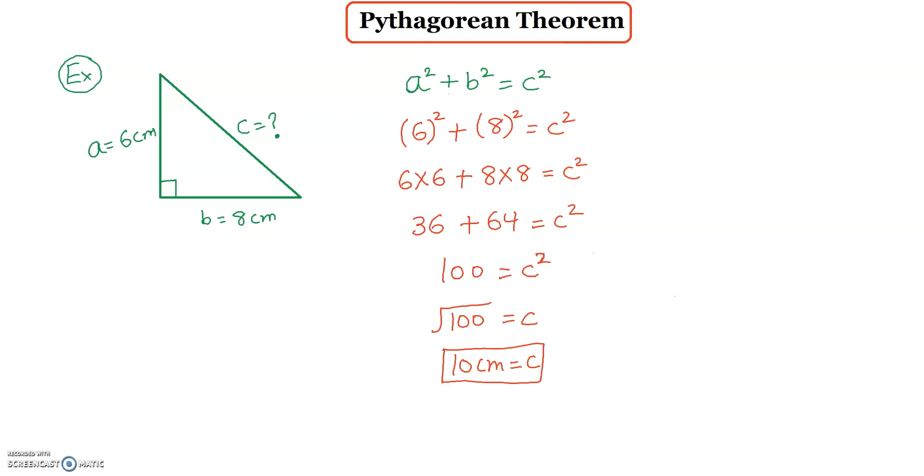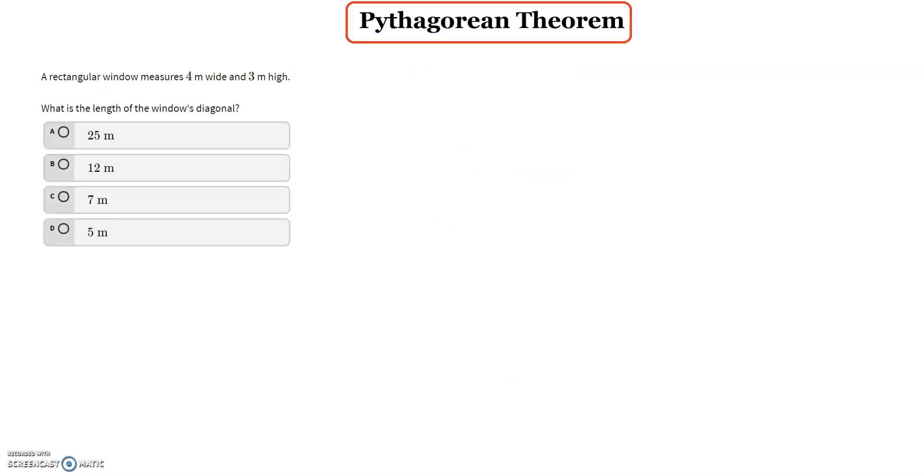Now I will be showing you one sample question of MPT. The question says a rectangular window measures 4 meter wide and 3 meter high. What is the length of the window's diagonal? So first thing is we will draw a rectangle. And then we're going to label it.